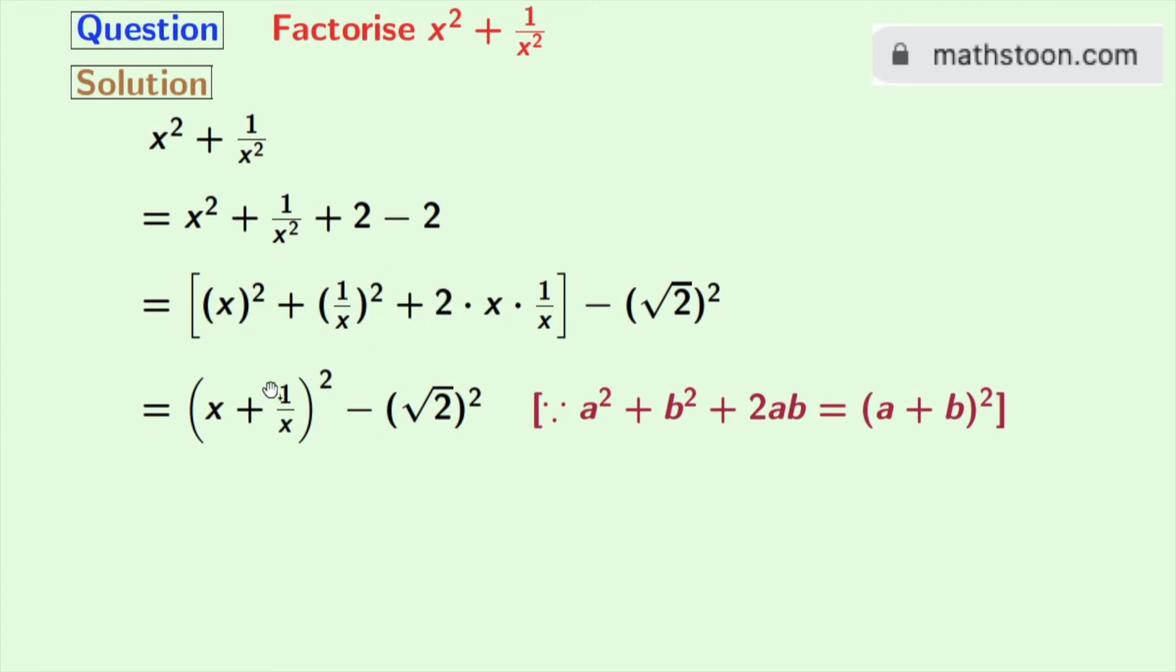And applying that we get x plus 1 by x whole square. And root over 2 whole square remains same. Now look that this expression is in the form of a-square minus b-square. Where a is x plus 1 by x and b is root over 2. So we can apply the formula of a-square minus b-square in this expression.